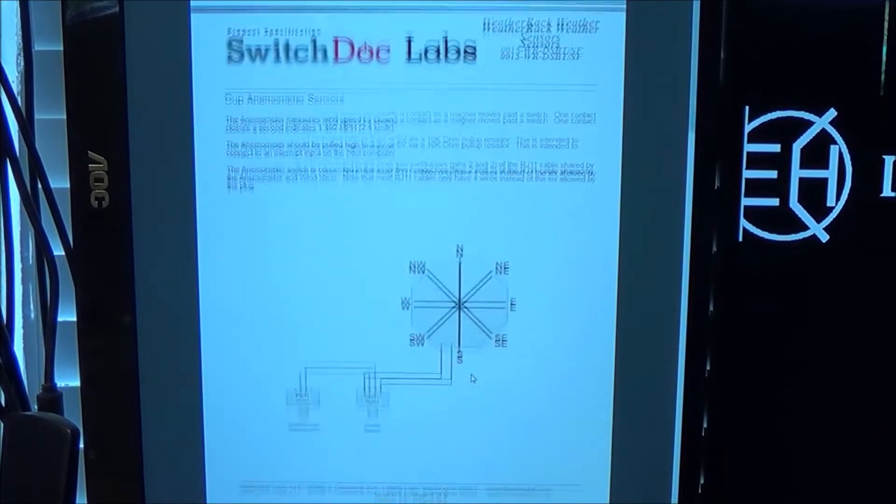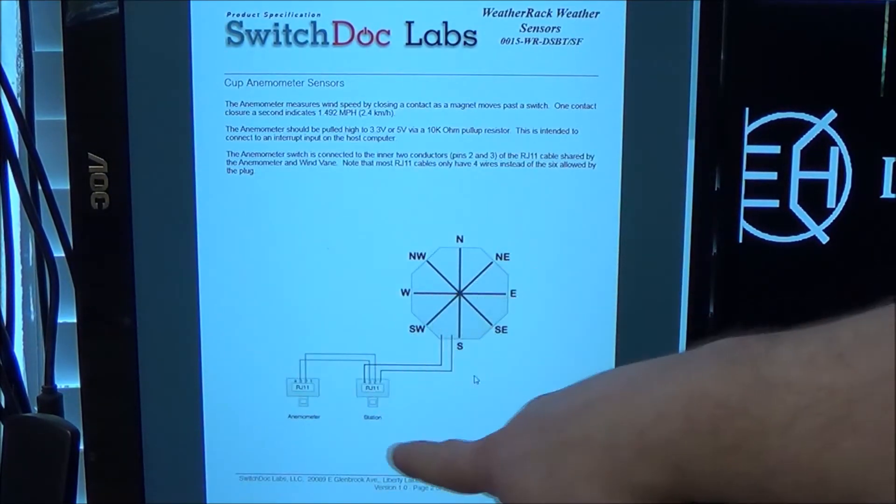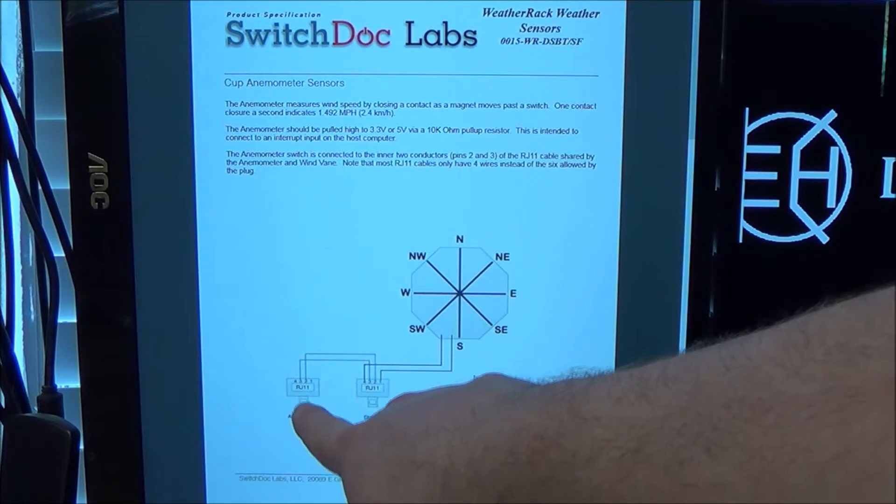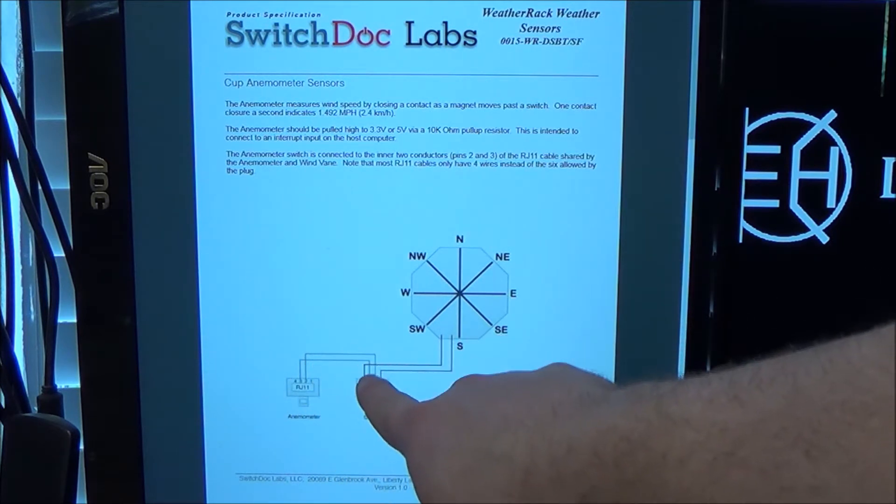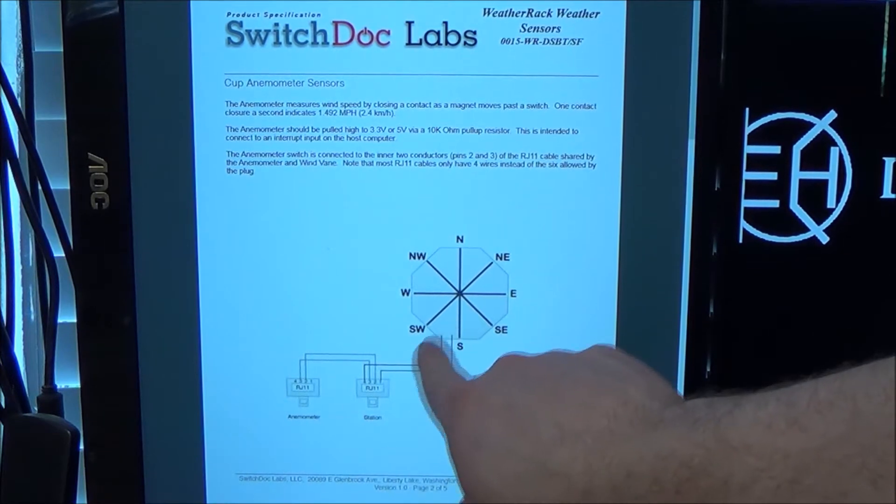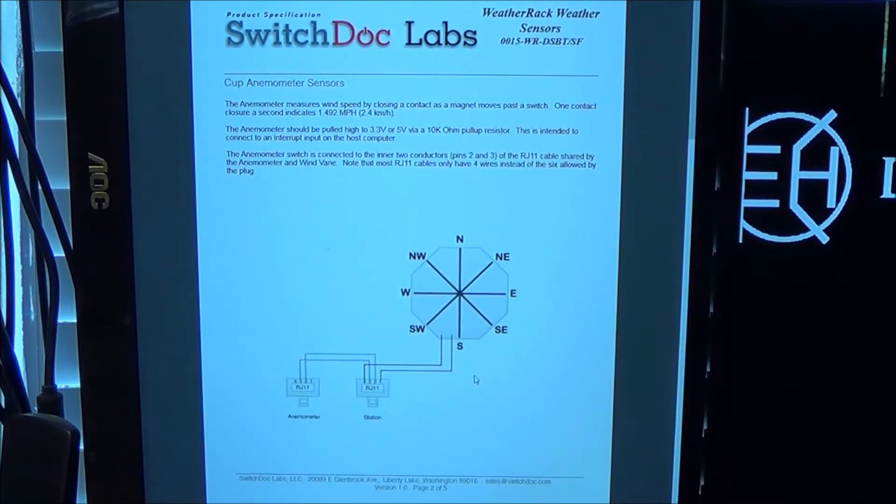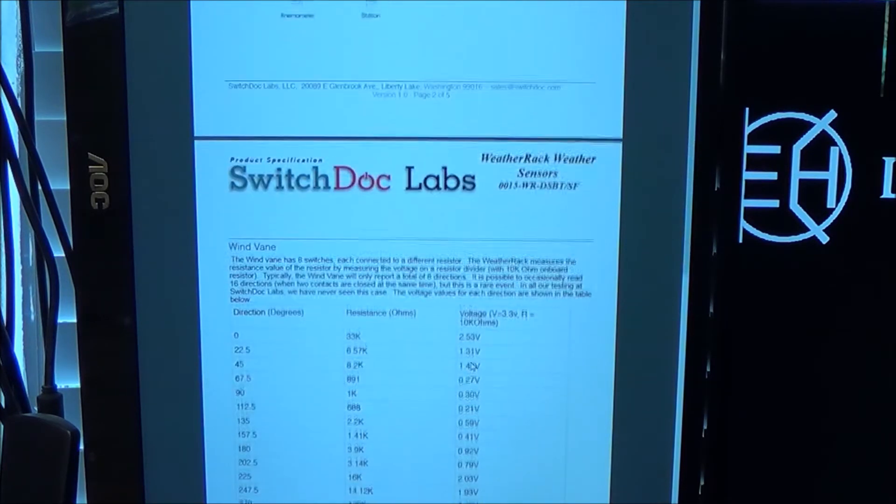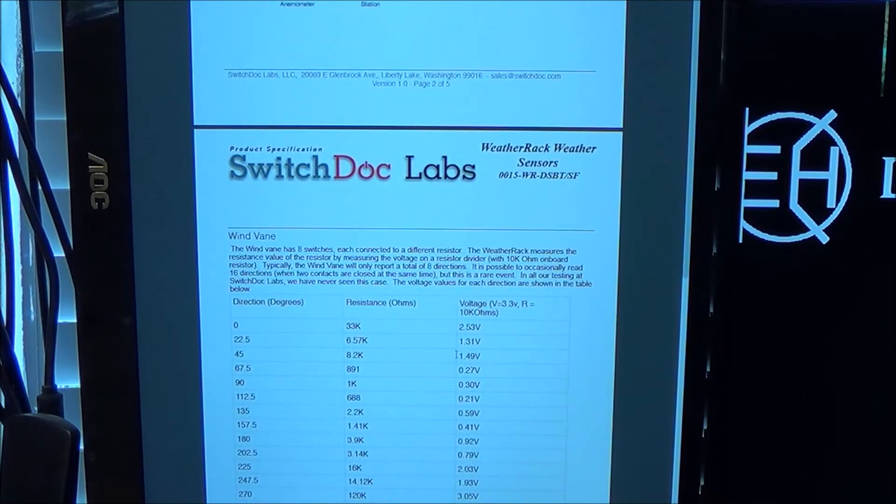The documentation shows how the sensors are wired. This shows the anemometer, which is wind speed, is on the center two pins of that plug. And then our wind direction is on the outer two pins. It doesn't actually seem to matter which ones you wire which.